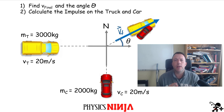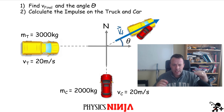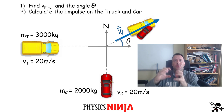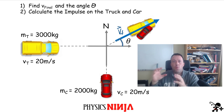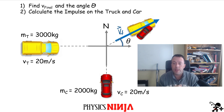Hi everybody, Physics Ninja here. Today I want to look at a perfectly inelastic two-dimensional collision. We have a truck traveling eastbound and a car traveling northbound. They are going to collide with one another and lock up, so after the collision they all move together as one big chunk of stuff, and that means both objects after the collision travel at the same velocity — at some angle relative to the x or east direction.